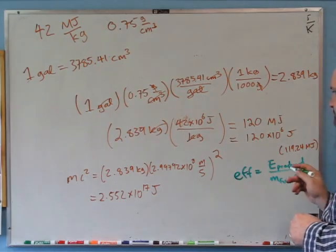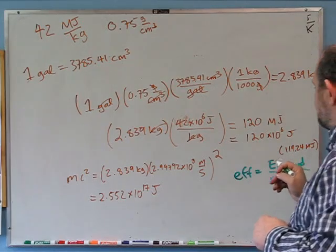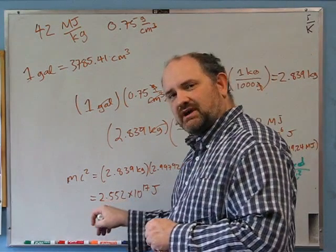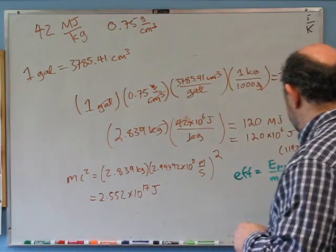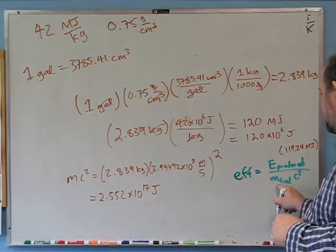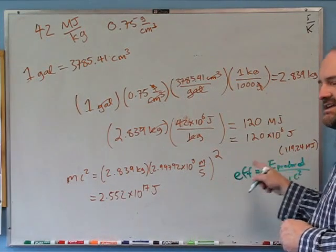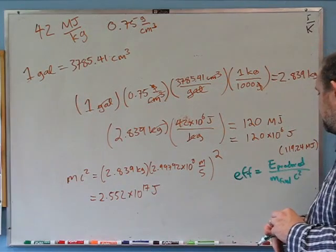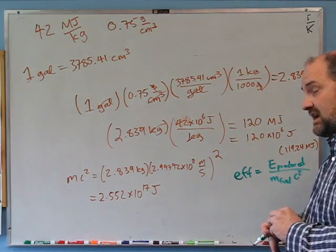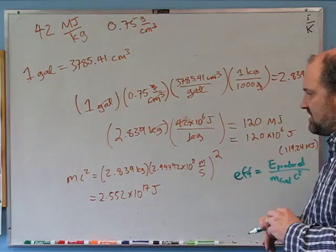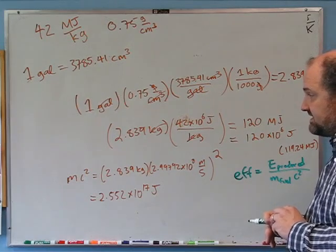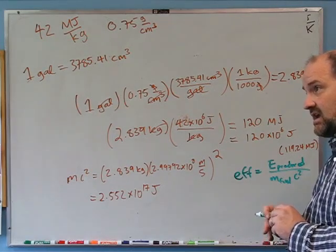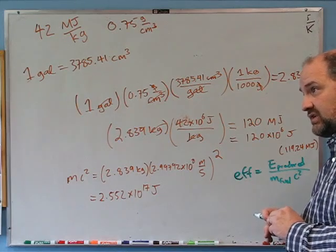I'm doing this a little bit wrong, because when you burn gas you also include oxygen. So when I calculate the mass of the fuel, I should include the mass of the oxygen too. To do that I'd need to know what gasoline is — it's probably octane.